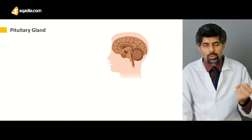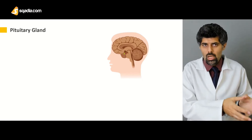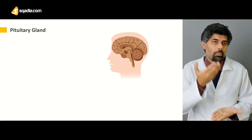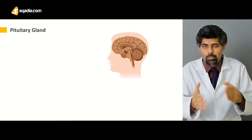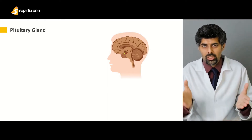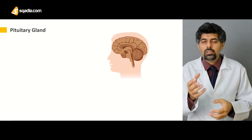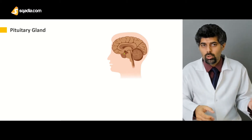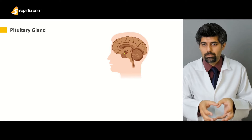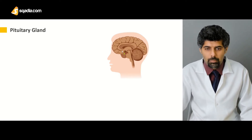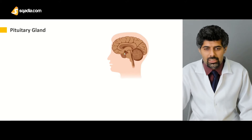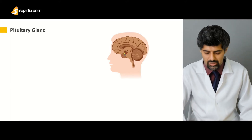The pituitary gland is found in the brain, at the floor of the brain, usually under the optic nerve and the point where both optic nerves cross each other — known as the optic chiasma — and it is also found at the bony site of the sphenoid bone known as the sella turcica. In the brain, this is the area where you will find the pituitary gland, and this little yellow area is the area of this gland.